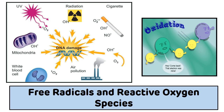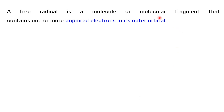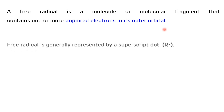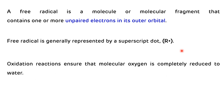Along with various multiple choice questions asked from this topic. The first definition: a free radical is a molecule or molecular fragment that contains one or more unpaired electrons in its outer orbit. That is the definition of a free radical, and they are generally represented as a superscript dot.